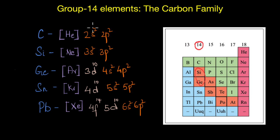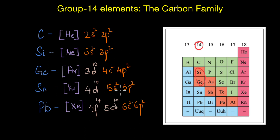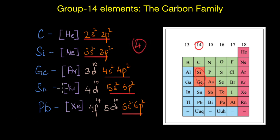Let's look at the electronic configurations. They all have the same number of valence electrons — two electrons in the s orbital and two in the p orbital, giving four valence electrons in their outer shell.